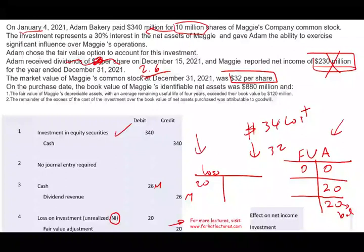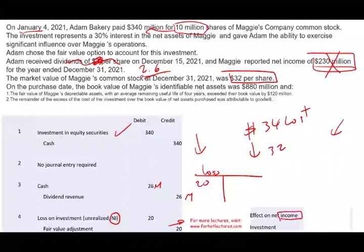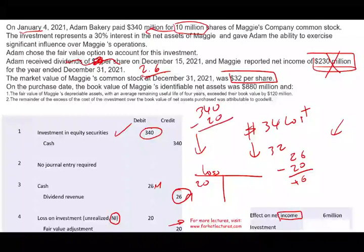Going through all these transactions using the fair value method — what's the effect on income? The dividend revenue of $26 million goes on the income statement, minus the loss of $20 million, so we have a net plus $6 million on income. What is the value of the investment? I purchased it at $340 million, with a fair value adjustment credit of $20 million — so the investment balance equals $320 million. That's the fair value.